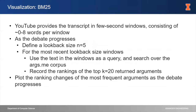The first visualization technique is based off of BM25. We leverage each YouTube transcript caption window — roughly zero to eight words per window — and define a look-back size of five. For each position in the debate, we use the text from the five previous caption windows as a query and search over the args.me corpus using BM25. We record rankings of the top K=20 returned arguments, and as the debate progresses we plot the ranking changes of the most frequent arguments over time.